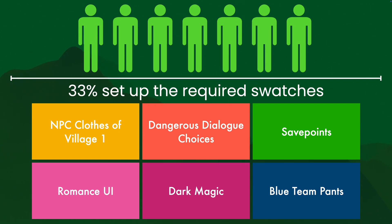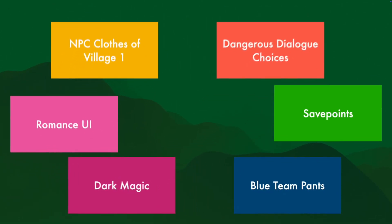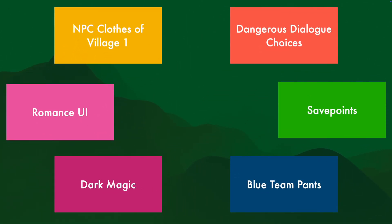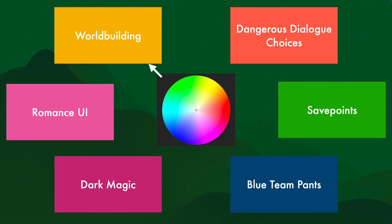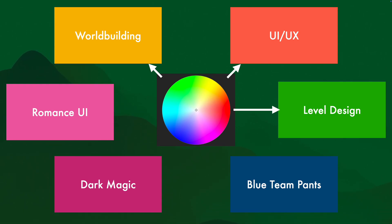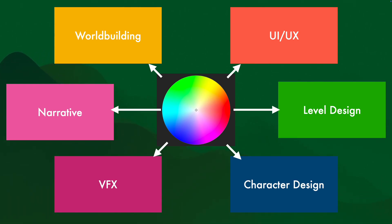And we can see that all those colors are used for very particular things. The color picker is used for world building, UI/UX, level design, character design, VFX, and narrative. This color picker is used in all of these different places — it's important for all of these various teams.